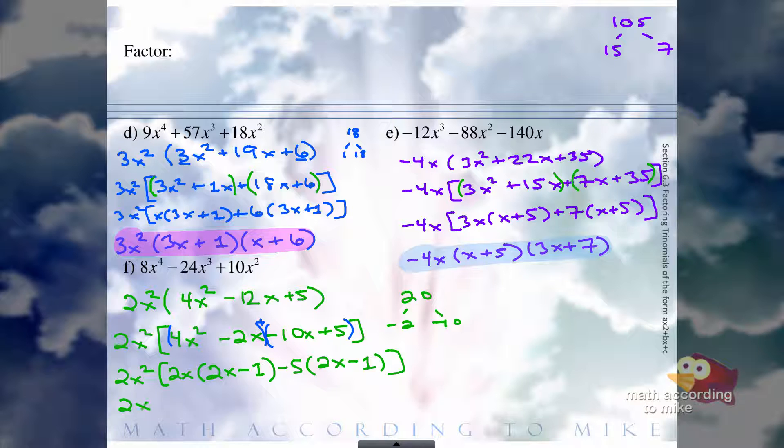So keep the 2X squared there. Pull out the 2X minus 1 they have in common and you're left with 2X minus 5. So the factorization of 8X to the fourth minus 24X cubed plus 10X squared is 2X squared times 2X minus 1 times 2X minus 5 in any order.